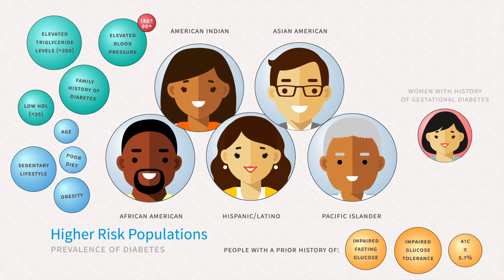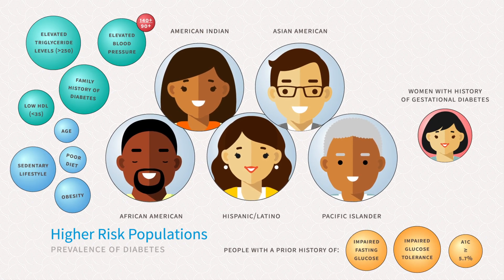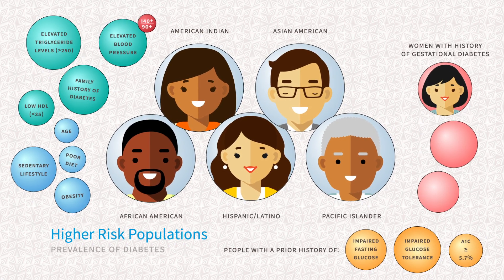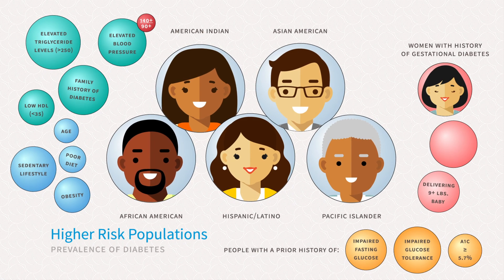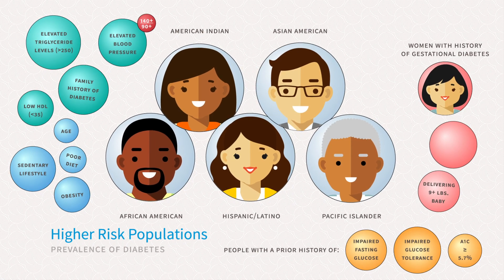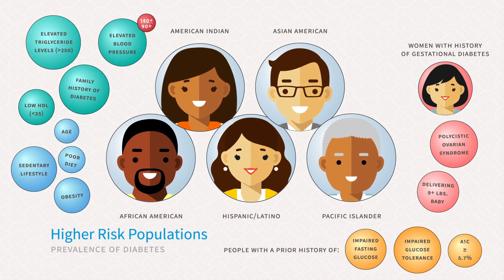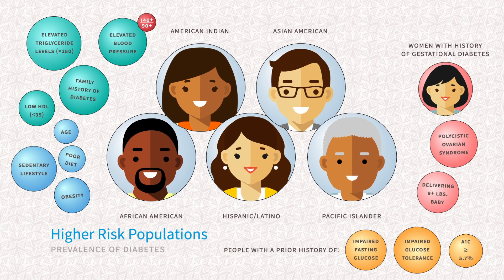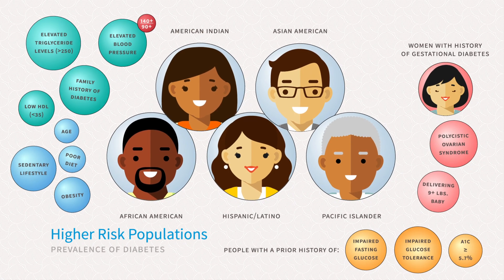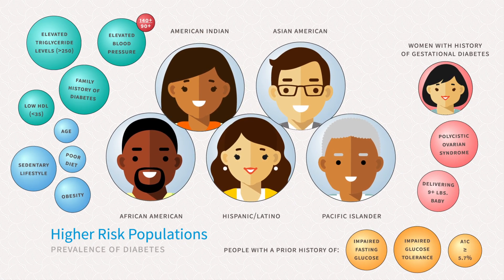Women with a previous history of gestational diabetes and delivering a child over 9 pounds, or being diagnosed with polycystic ovarian syndrome (PCOS), are also at higher risk for developing type 2 diabetes.